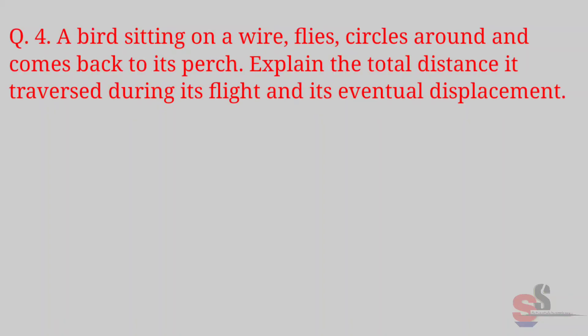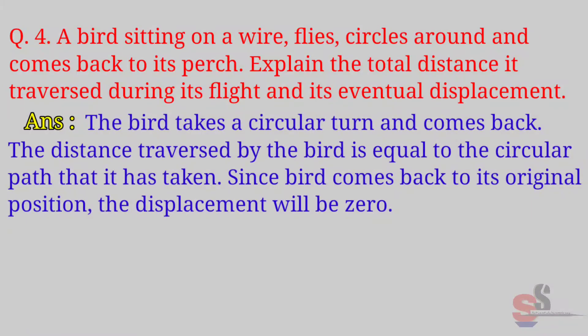Question fourth: A bird sitting on a wire flies, circles around and comes back to its spot. Explain the total distance it traverses during its flight and its eventual displacement. Answer: The bird takes a circular turn and comes back. The distance traversed by the bird is equal to the circular path that it has taken. Since the bird comes back to its original position, the displacement will be zero.